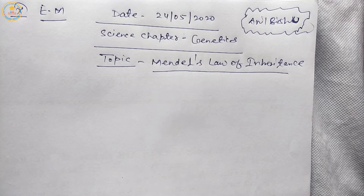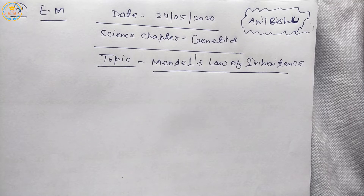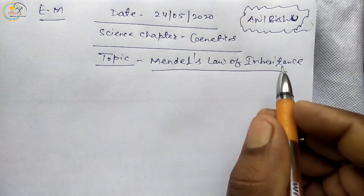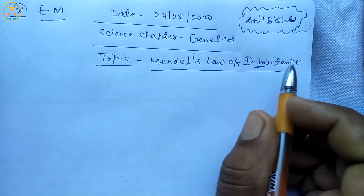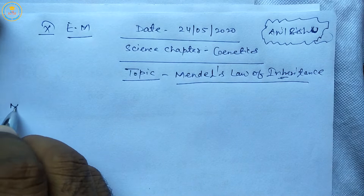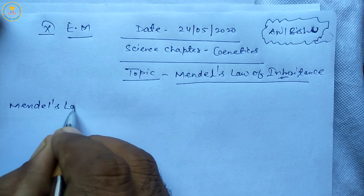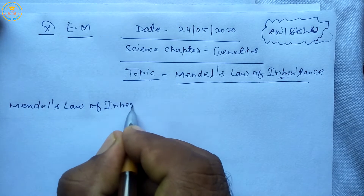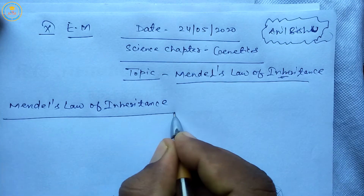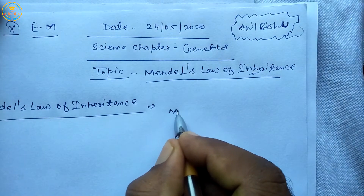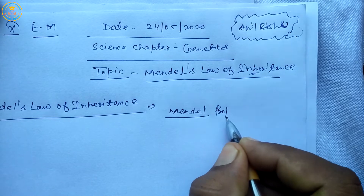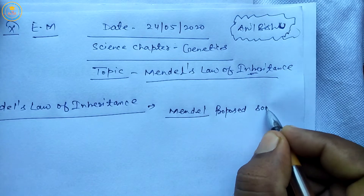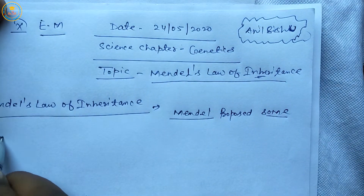Today we are starting the genetics chapter and today's topic is Mendel's law of inheritance — the passing of traits from generation to generation. Mendel, known as the father of genetics, proposed some important laws.